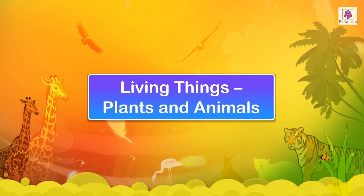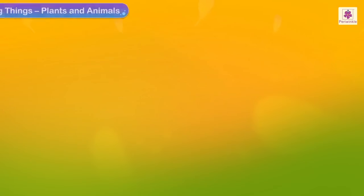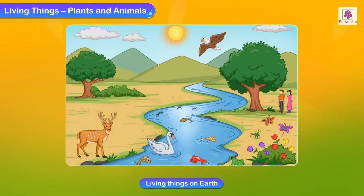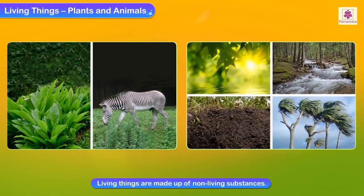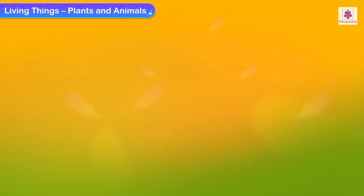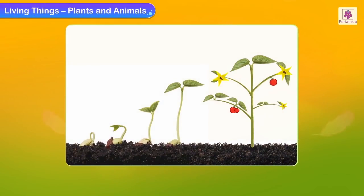Living things — plants and animals — form the living world on the earth and are a very important part of the natural environment. On a basic level, living things are made up of non-living substances. Natural things live in a delicate balance with the non-living things, and this balance needs to be maintained.